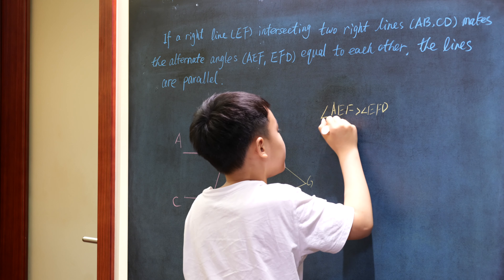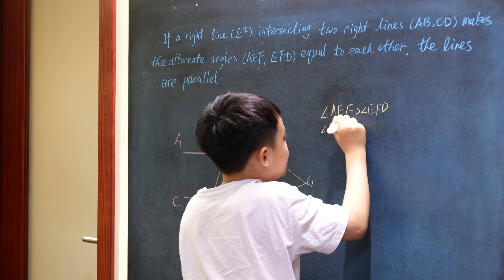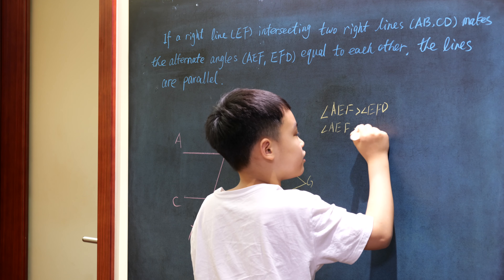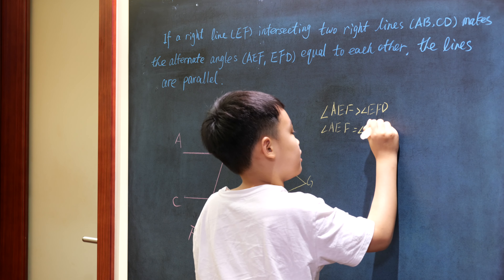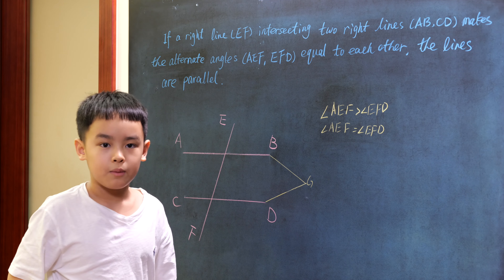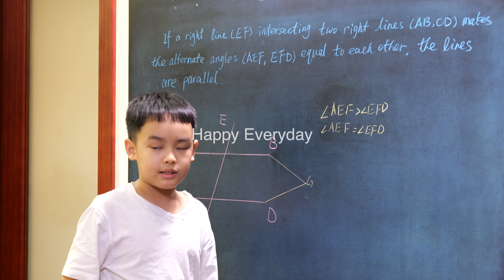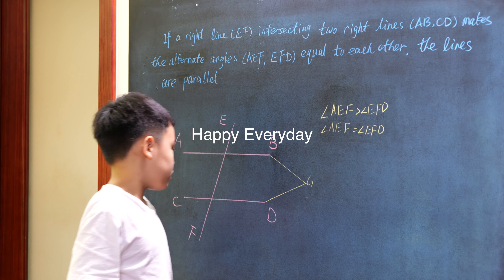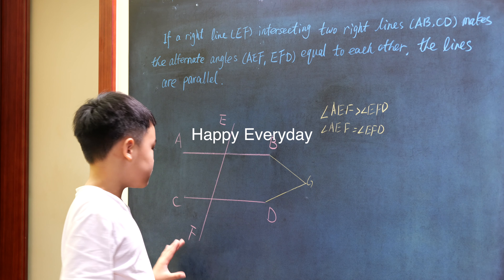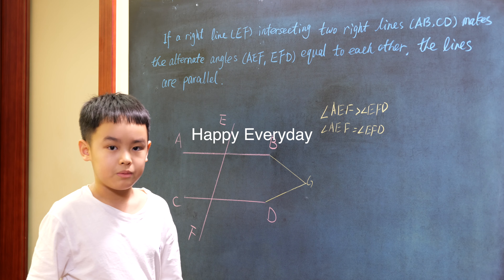But angle AEF is equal to angle EFD, which means the angle is both equal and greater than another angle, which was impossible and absurd. So line AB and CD must be parallel.